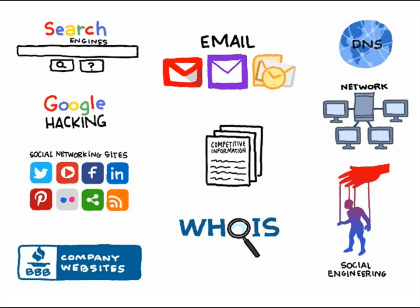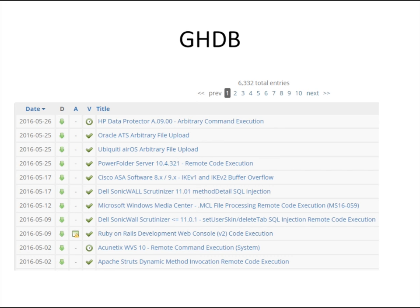For passive information gathering, there are many options — starting with search engines. It's possible to use a Google search for a specific string found in vulnerable systems' URLs. That's called Google hacking, which doesn't mean hacking Google — it refers to using Google's services to find target information without directly visiting that customer's site. There's something called the Google Hacking Database, where verified entries include things like an IPsec buffer overflow that a Cisco ASA is susceptible to.